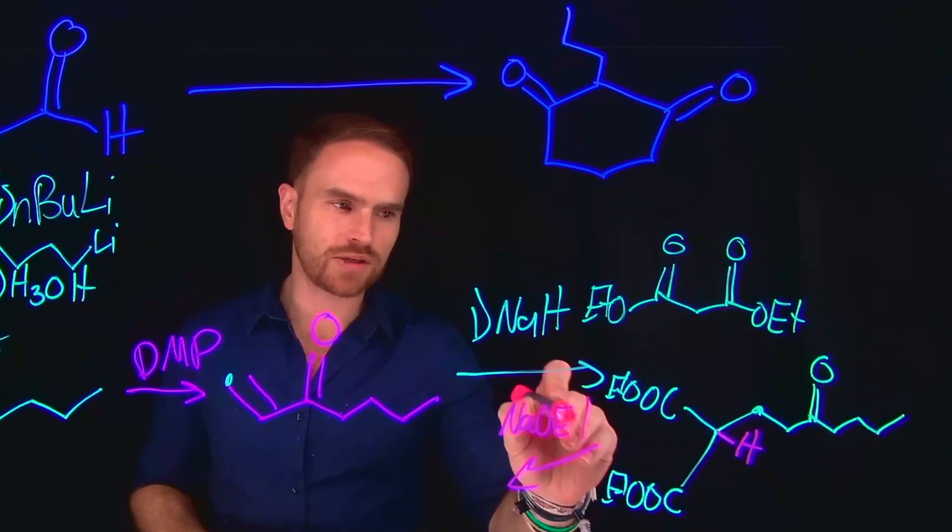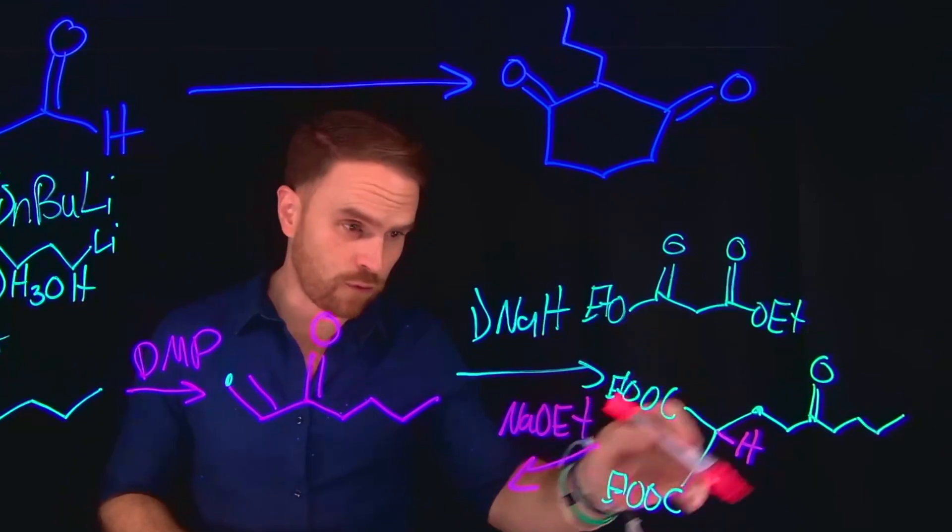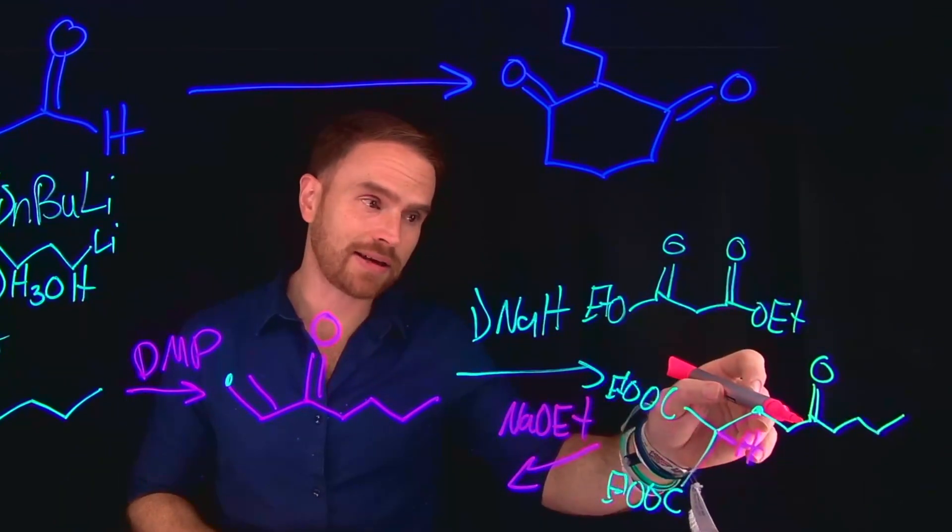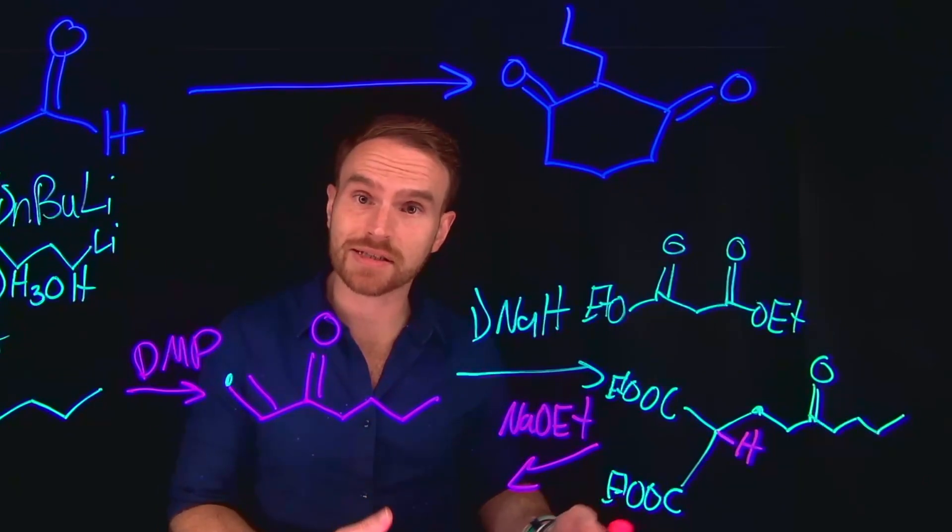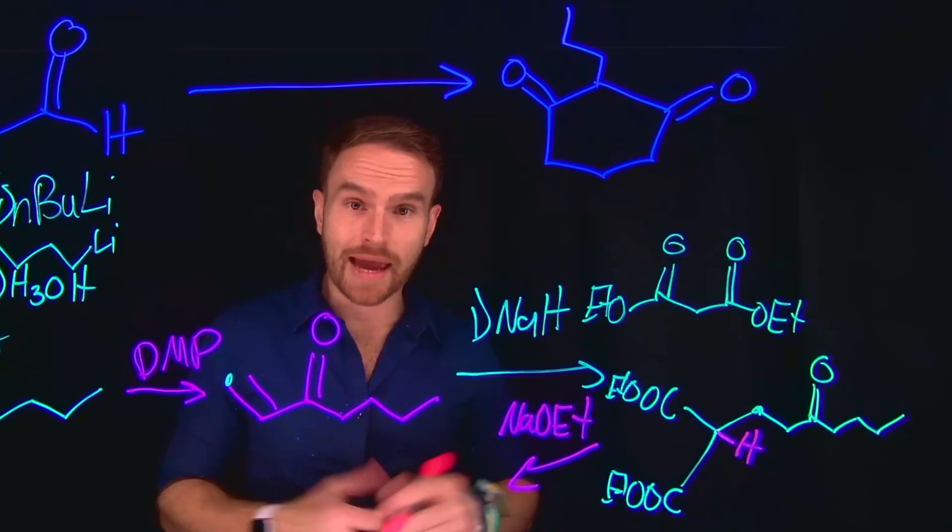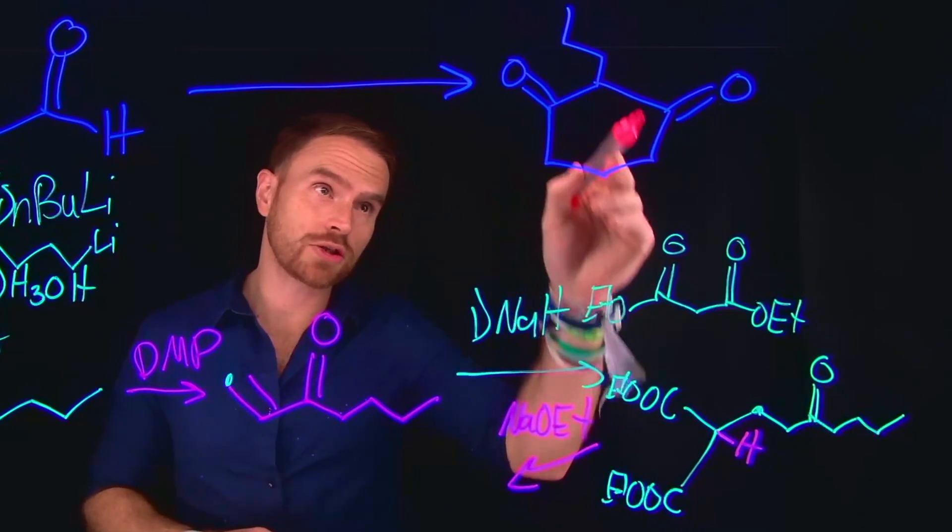So when we do that, we would deprotonate this, form an enolate, which would subsequently attack here, and that's going to be a cyclization process. And that cyclization process is called the Dieckmann cyclization. And the product of that transformation is going to close this ring.